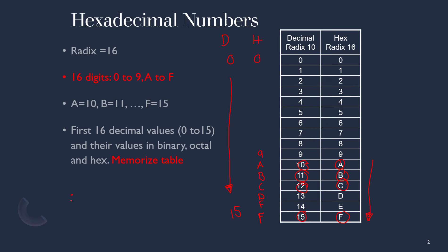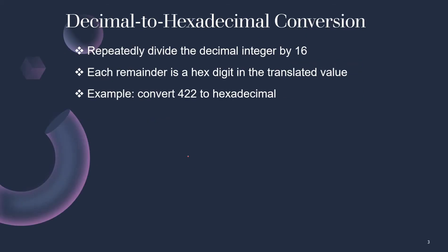So in essence, the hexadecimal format is 0 to 15, but in actuality, it's 0 to 9 and then A to F. So it's good to memorize this table, but after a while you just understand that 0 to 9 and then it goes from A to F. Just remember it's 0 to 15.